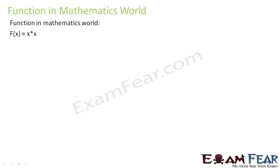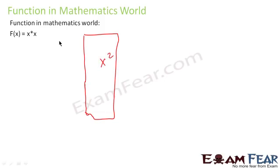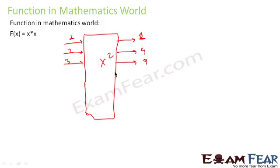Let's see a function in the mathematics world. Consider f(x) → x². Whatever input you give, it squares it. If you give 1 as input, you get 1² = 1. If you give 2, you get 2² = 4. If you give 3, you get 3² = 9. If you give 4, you get 4² = 16. If you give 5, you get 5² = 25.